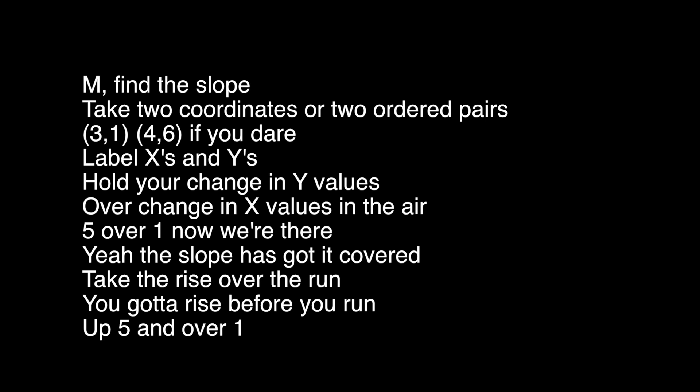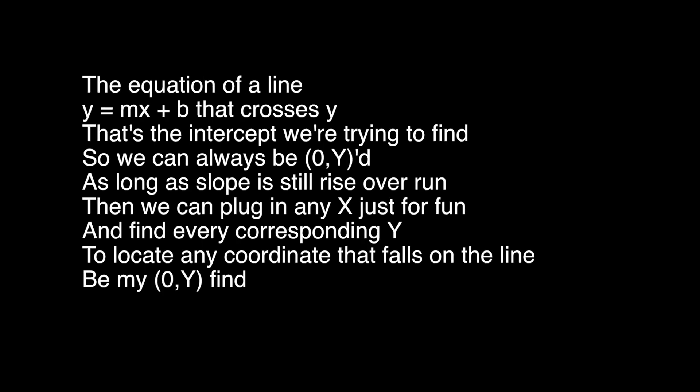The slope has got it covered. Take the rise over the run — you've got to rise before you run. Up five and over one. The equation of a line: y equals mx plus b, that crosses y. That's the intercept we're trying to find. So we can always be zero comma y. As long as slope is still the rise over run, we can plug in any extras for fun and find every corresponding y. Locate any coordinate that falls on the line — be my zero comma y find.